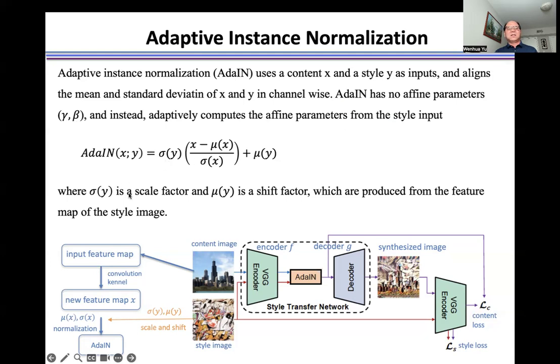Sigma (σ) is a scale factor and mu (μ) is a shift factor, which are computed from the feature map of the style image.